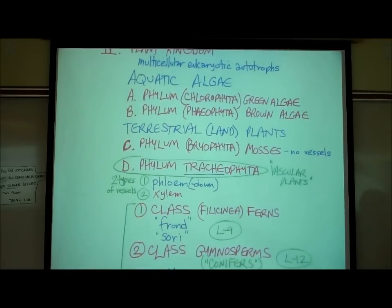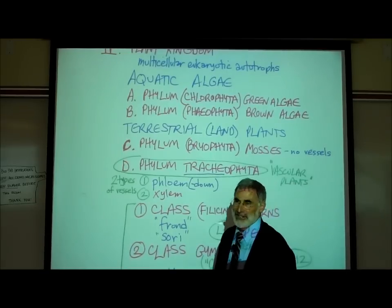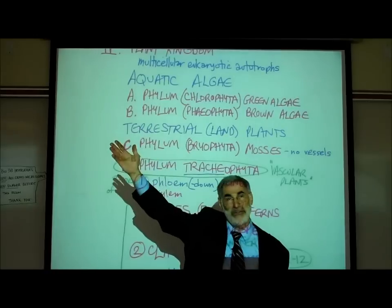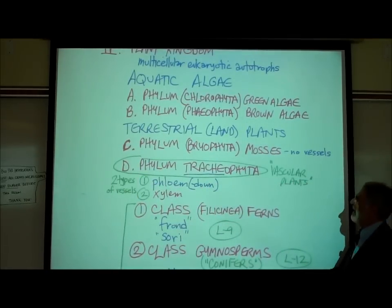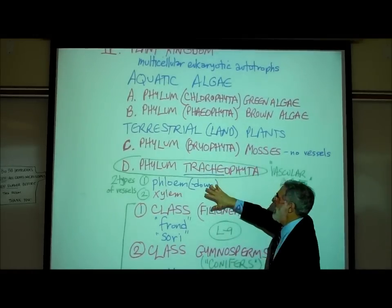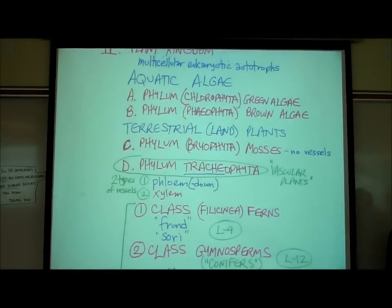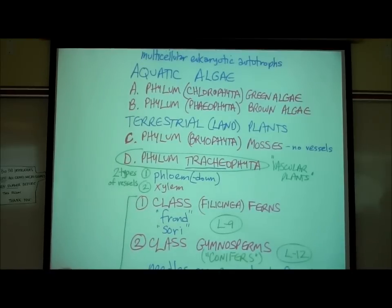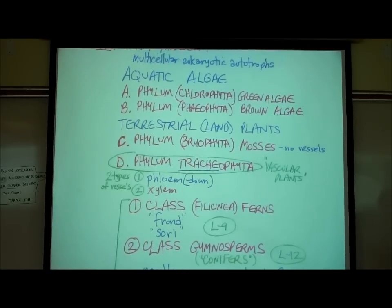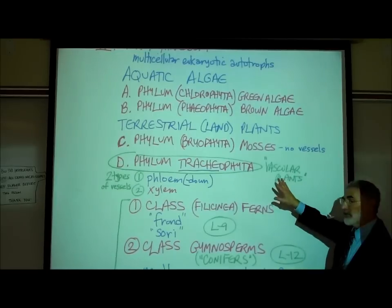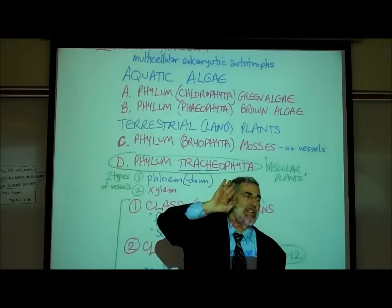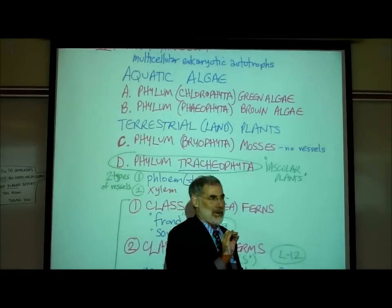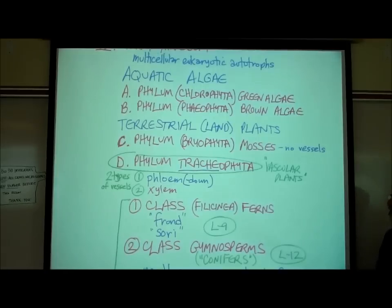Then there are the so-called terrestrial plants. The word terrestrial means they live on land. If we're talking about an extraterrestrial they live on another planet. Terrestrial means on land. These include mosses and the tracheophytes. The technical scientific name for mosses is bryophyta, but we'll just call them phylum mosses. We learned what lichens are today, and while many of you thought a lichen was a moss, we're going to explain what a moss is and understand that that's not the same as a lichen.